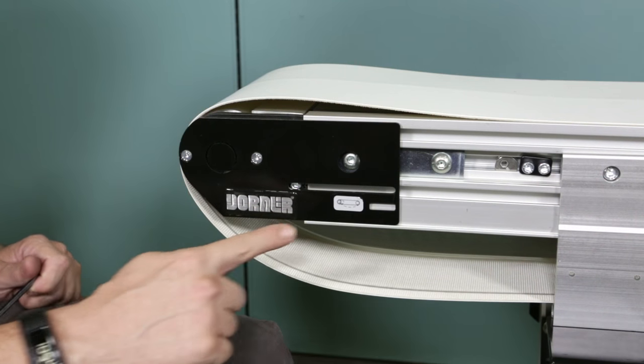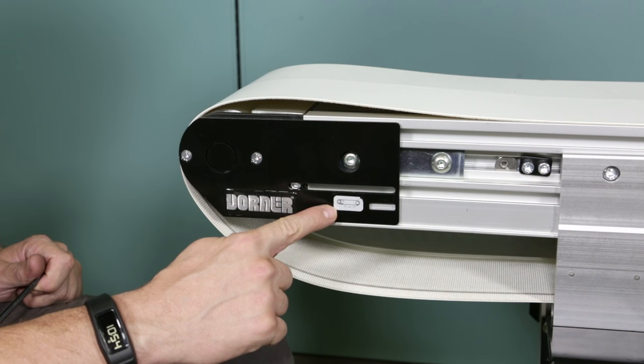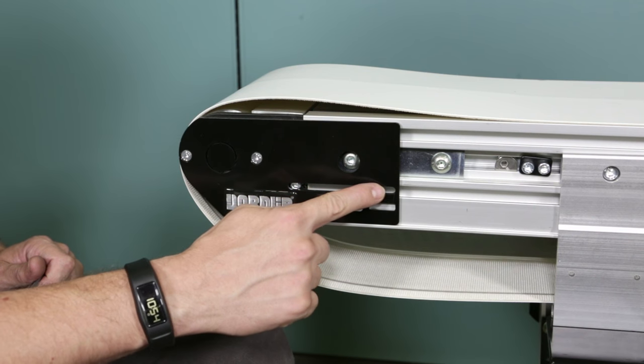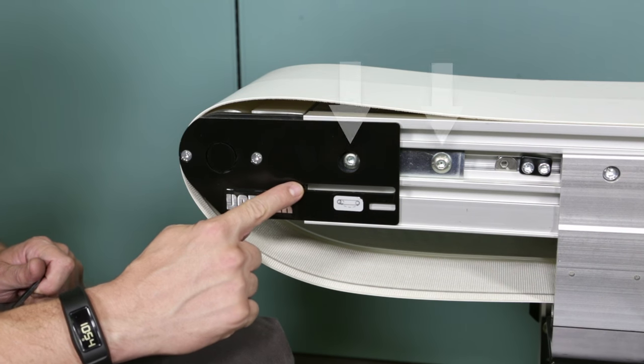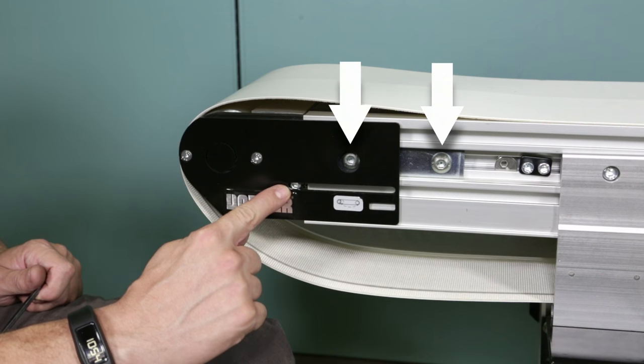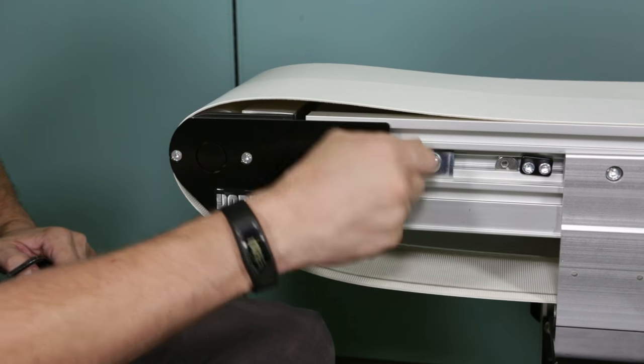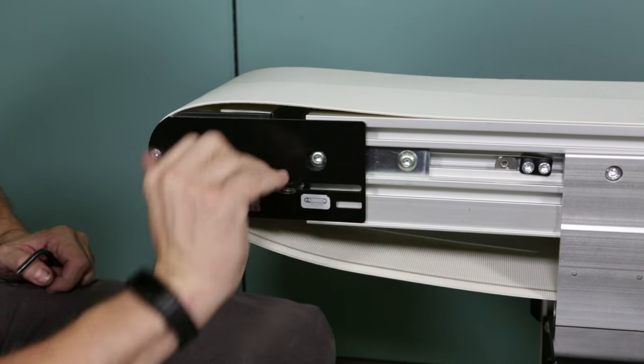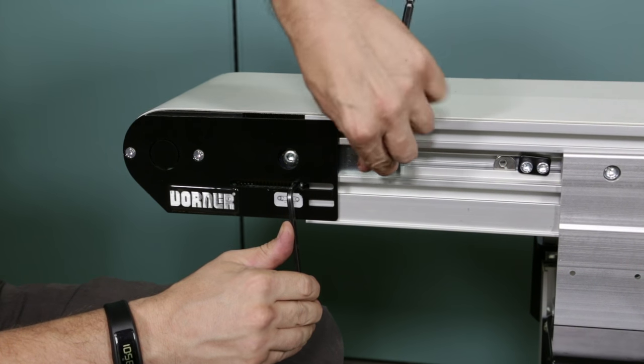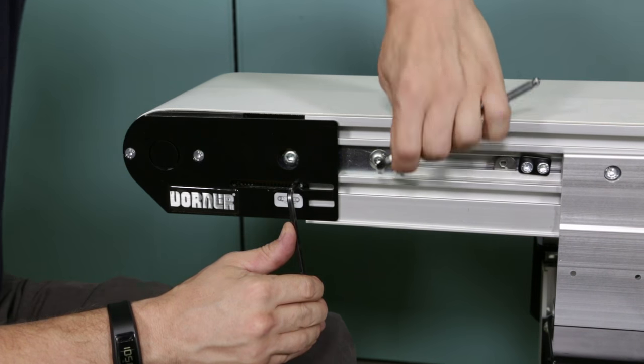If the conveyor needs to be tensioned, locate the tension end of the conveyor, identified by the tensioning sticker and the pinion access slot. Loosen the M10 headplate screws if necessary. Rotate the pinion to extend the headplate assembly. After adjusting tensioning, tighten the headplate screws on both sides of the conveyor.